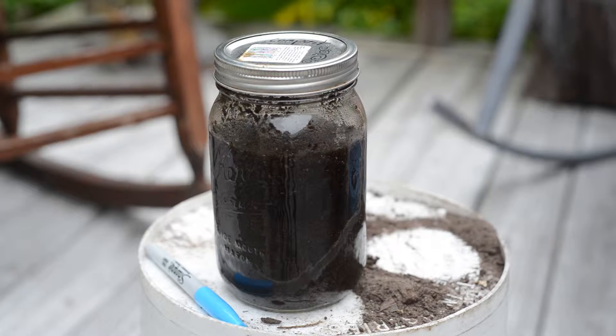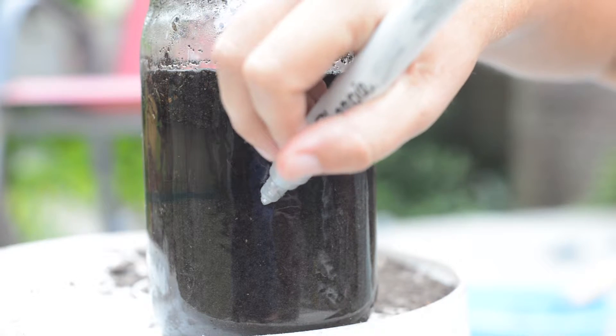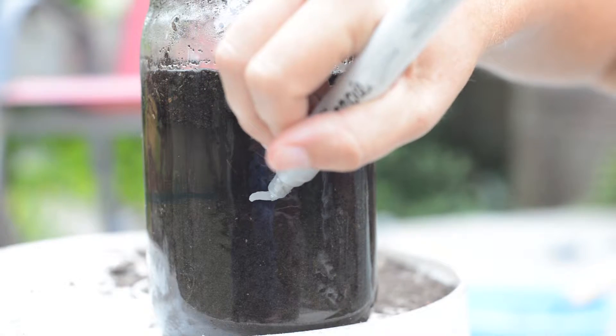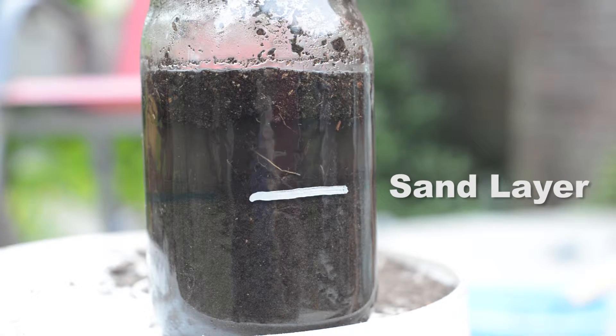As soon as you stop shaking, count one minute and mark a line on the outside of the jar using a permanent marker showing the coarse sand layer that is visible at the bottom of the jar.